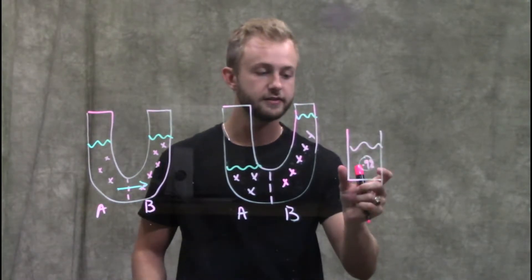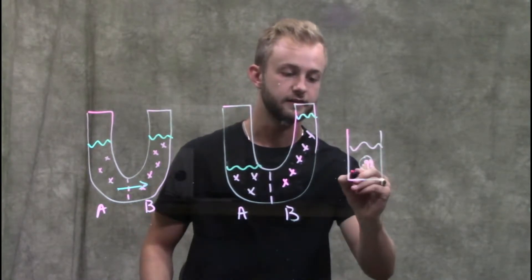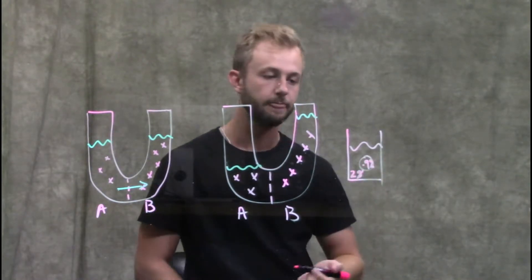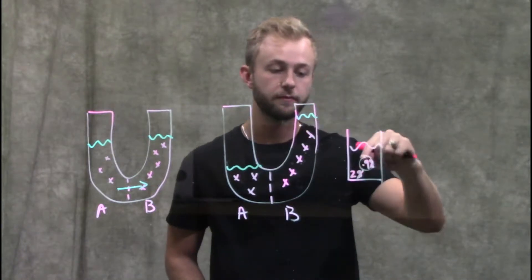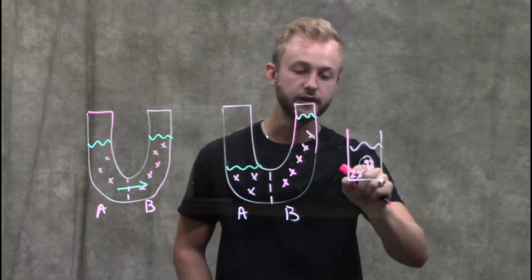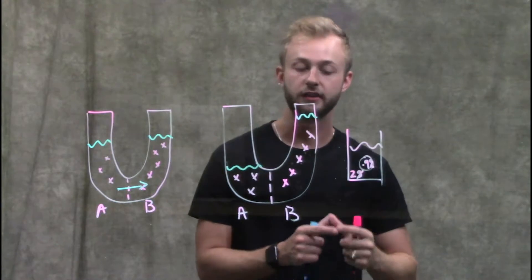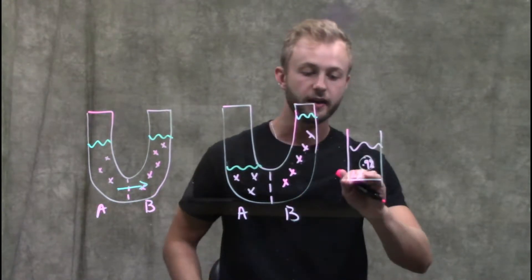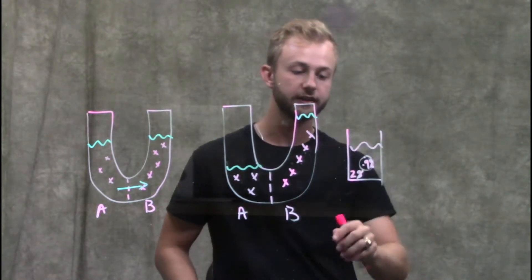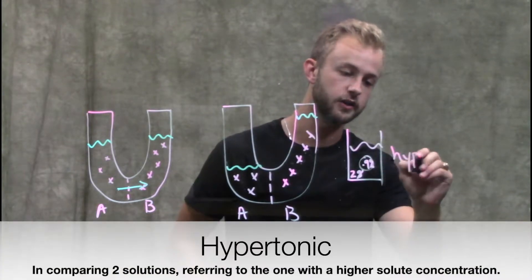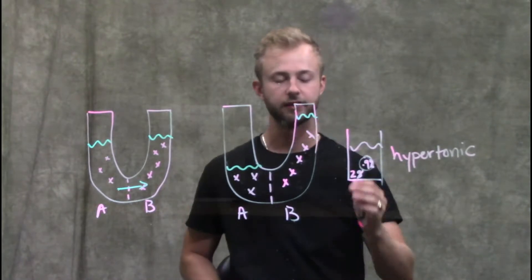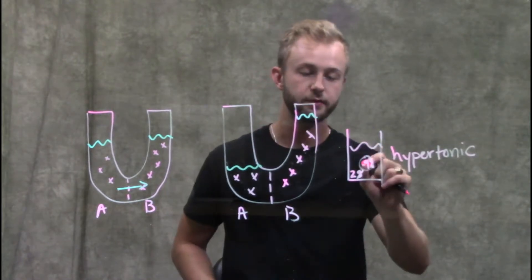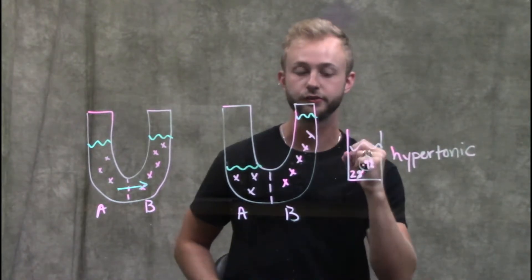If we put it in a solution that is, let's say, 2% sodium chloride, then water is going to move from inside the red blood cell out into the solution and the red blood cell will shrivel. Because it's moving out, we'll say that this solution is hypertonic. When this blood cell's in a hypertonic solution, it's going to shrivel.